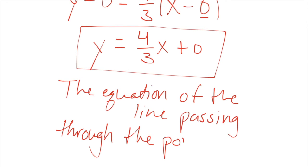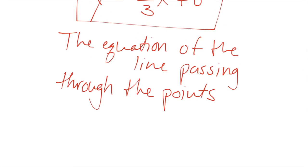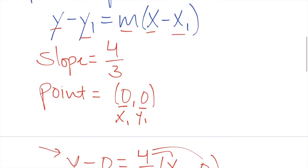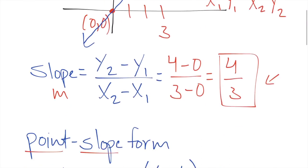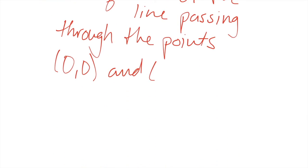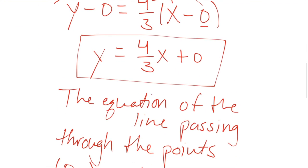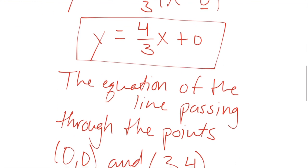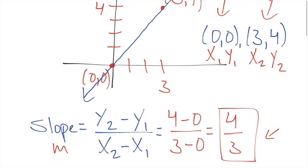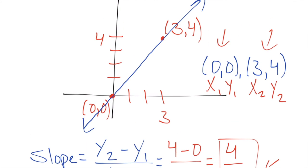(0,0) and what was the other one, (3,4). This is a nice little write up. This is the equation of the line passing through the points (0,0) and (3,4), so basically it's the equation to this line.